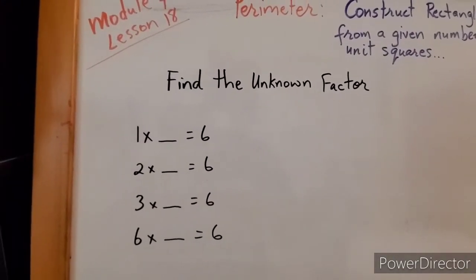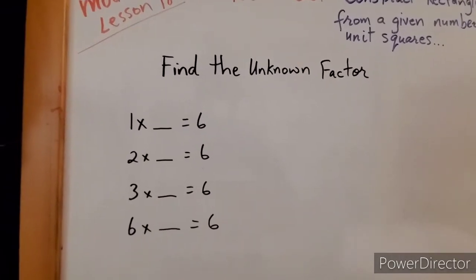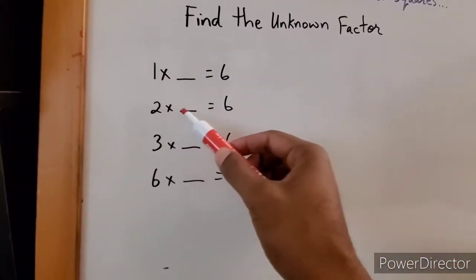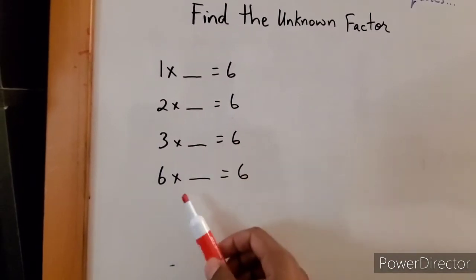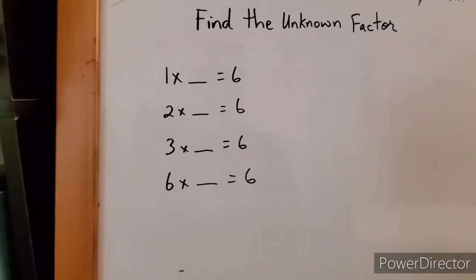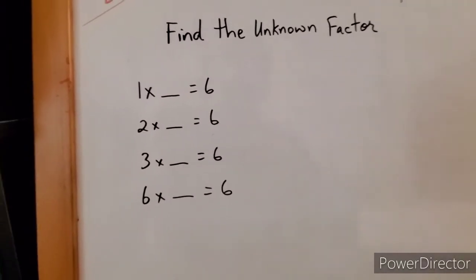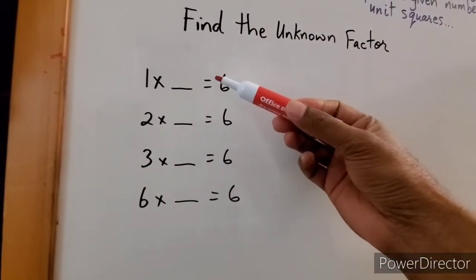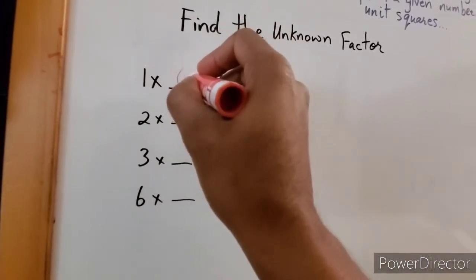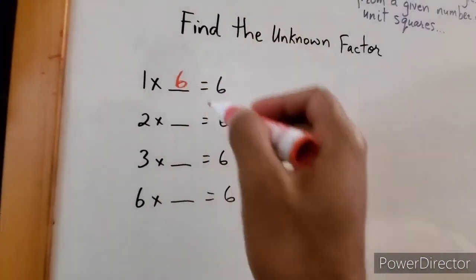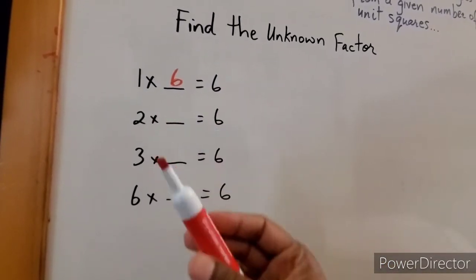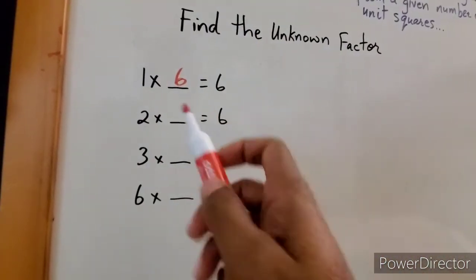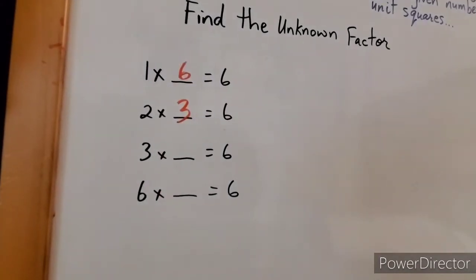We're focusing on finding the unknown factor. Let's look at these four different multiplication problems: one times blank equals six, two times blank equals six, three times blank equals six, and six times blank equals six. We just need to fill in the blank. One times what gives us six? One times six. Two times what gives you six? Two times three gives you six.